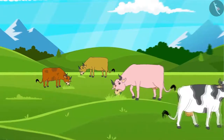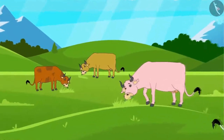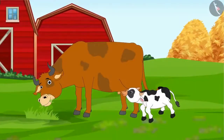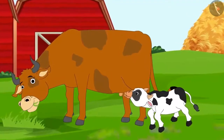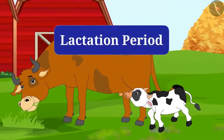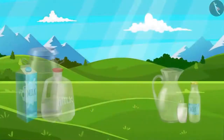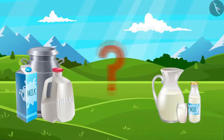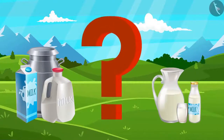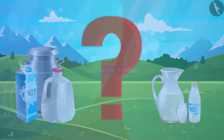Do female animals always give milk? No, the female animal gives milk only after the birth of a calf, and that particular period is called the lactation period. The production of milk can be increased by increasing the duration of the lactation period.